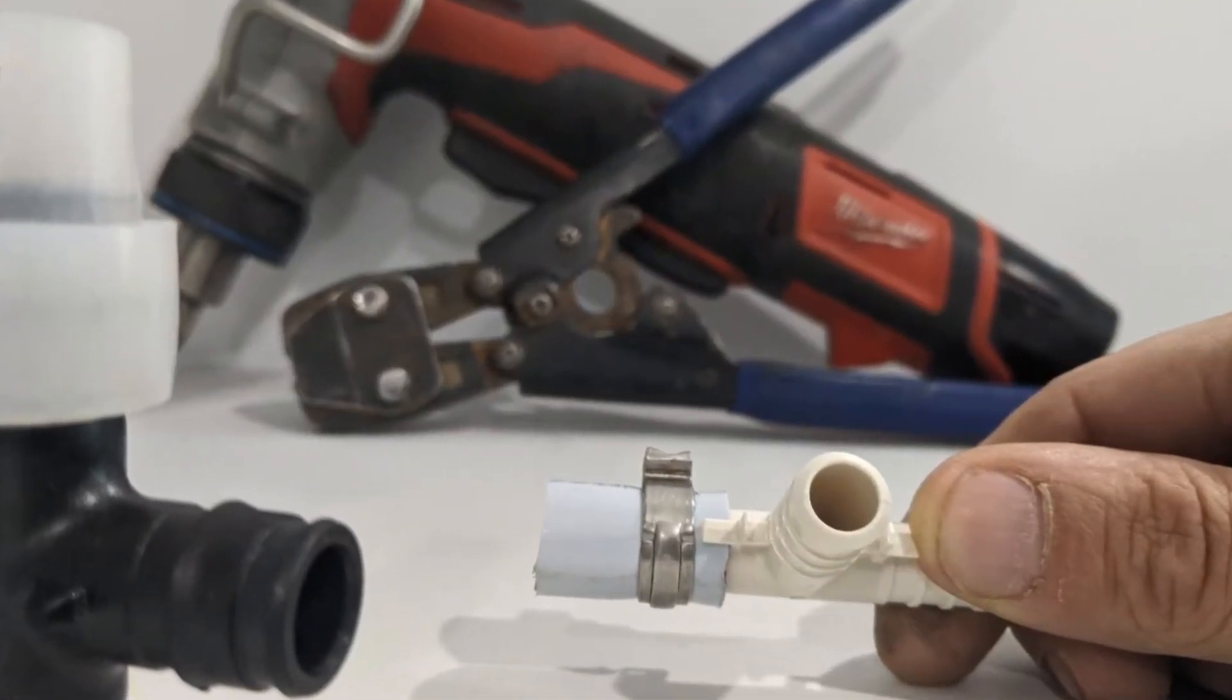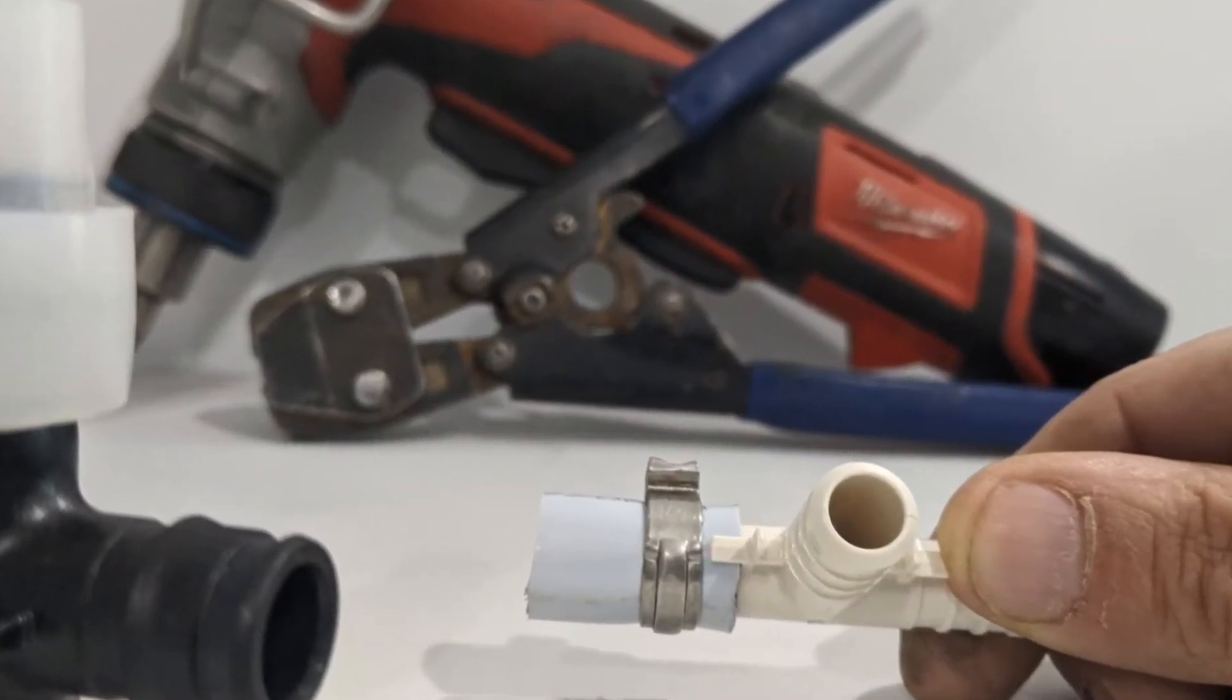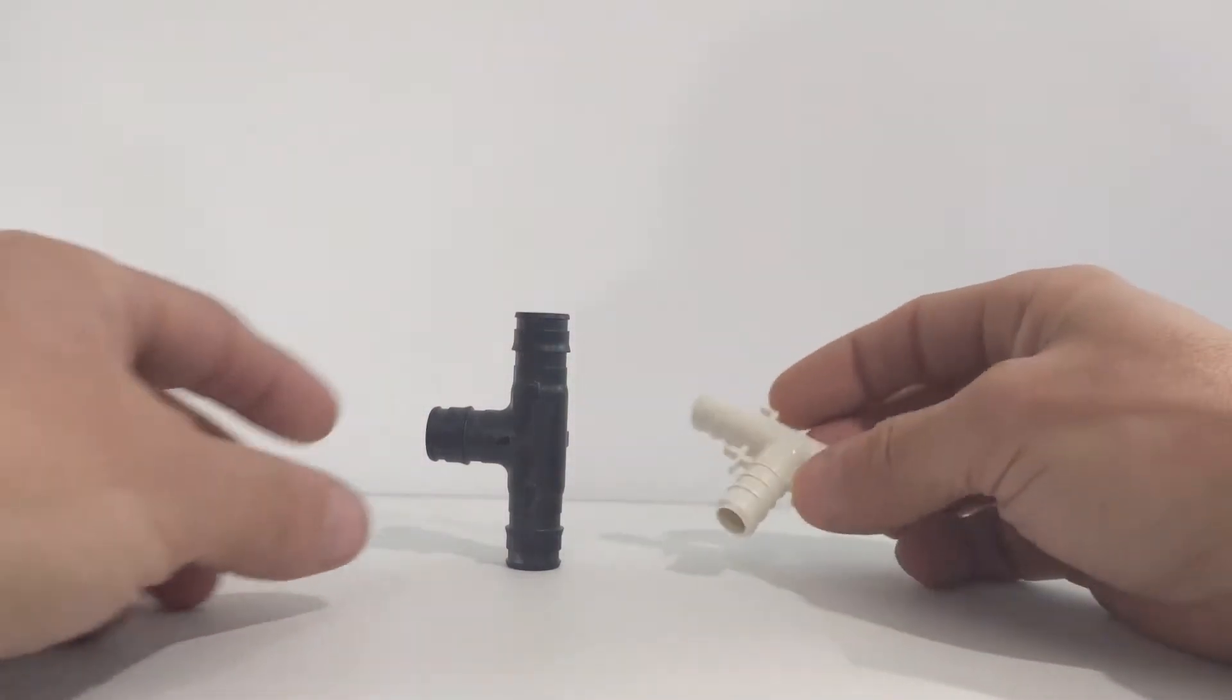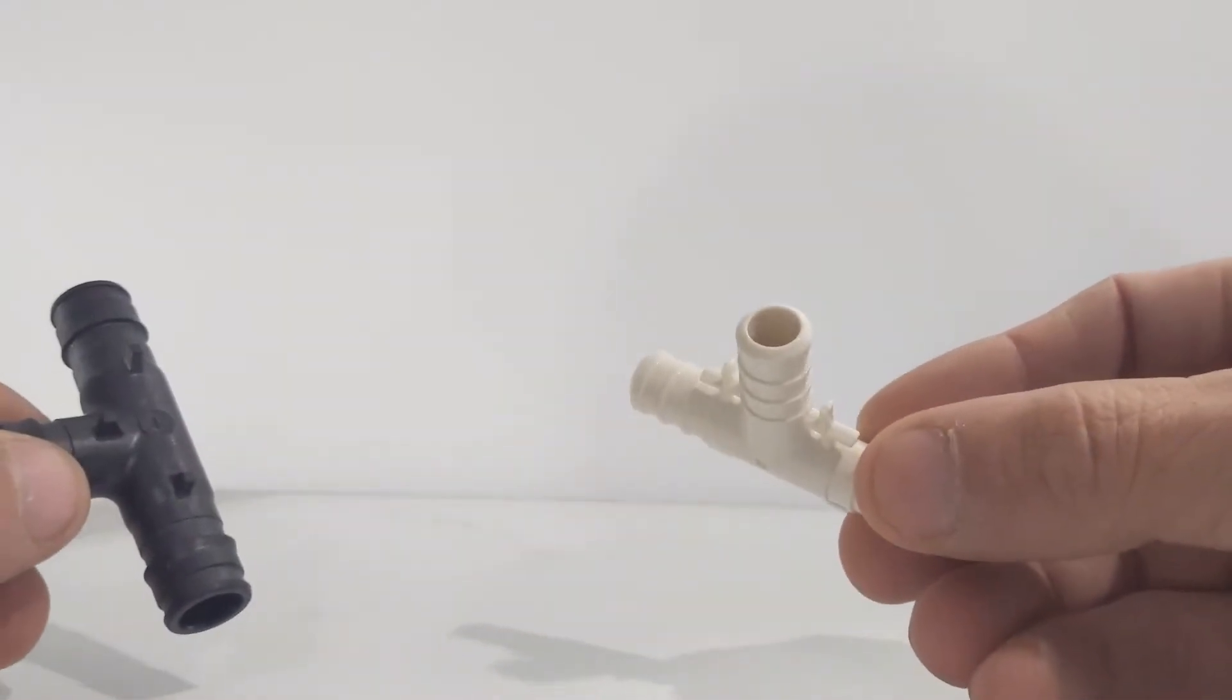Today we're going to take a look at the difference between PEX-A and PEX-B plumbing water lines. We have two different types of T's here, one is a PEX-B T and one is a PEX-A T.